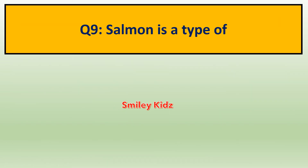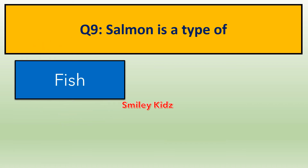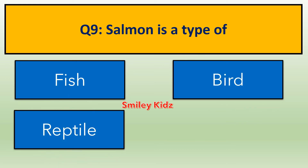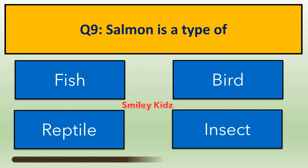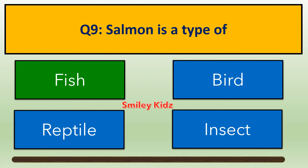Question number 9. Salmon is a type of — options are: A. Fish, B. Bird, C. Reptile, D. Insect. The right answer is Fish. Salmon is a type of Fish.